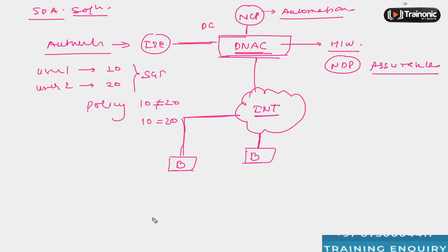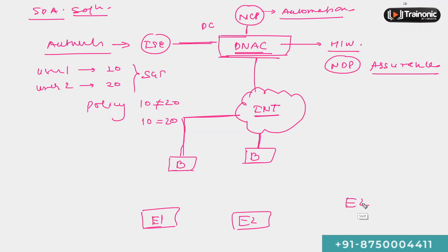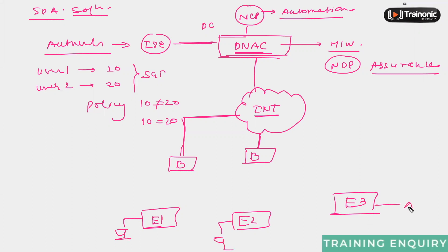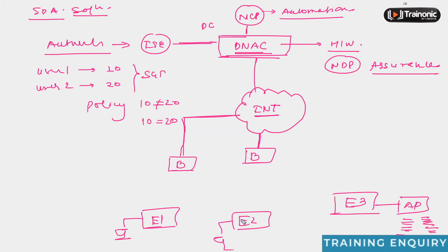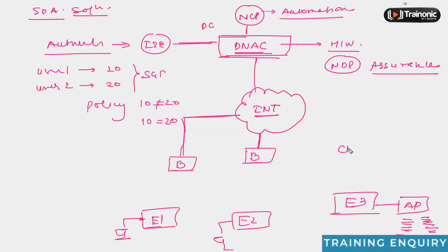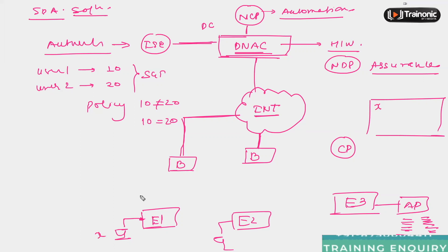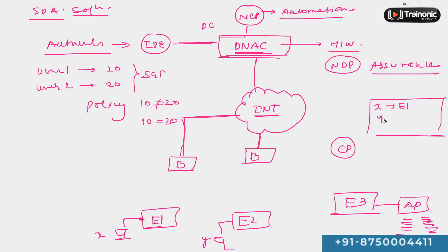Then we have edge devices — S device one, S device two, S device three. These edge devices are where our wired or wireless users are connected. We can connect an access point so a wireless user can be connected as well. These S devices are typically the switches of your SDA fabric. There is also a control plane device, which is responsible for keeping track of what endpoint is connected to what fabric edge device.